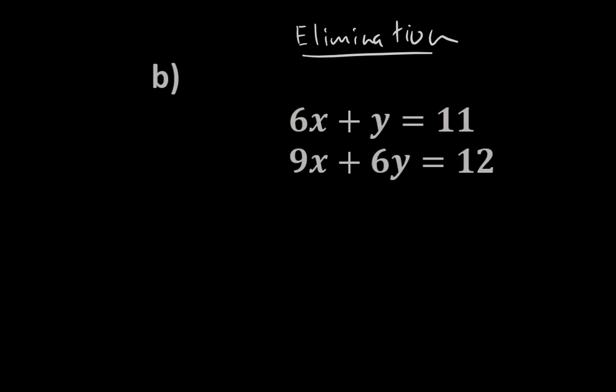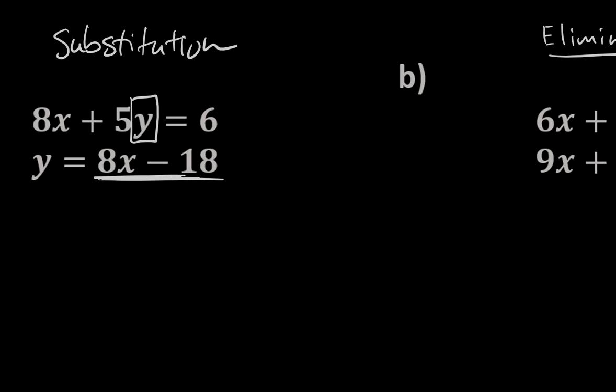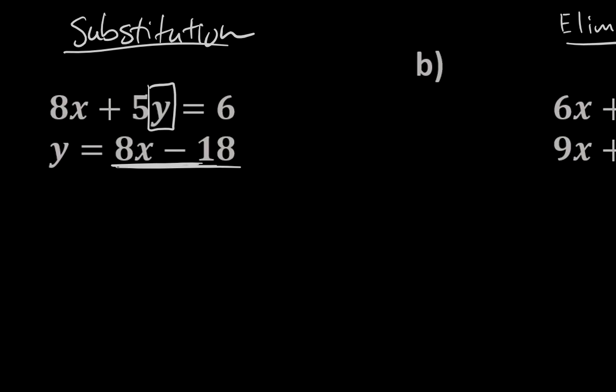And a couple of you used elimination method for this one. You transformed it first by moving this 8x over, and it became a negative 8x, and that did quite a nice job. I'm going to use substitution here just because I can see that y is alone, and I can replace this y in the first equation with 8x minus 18. So I'll use substitution here. However, I really like the argument of I think this is easier to do with elimination.